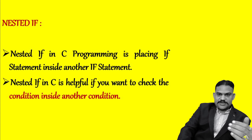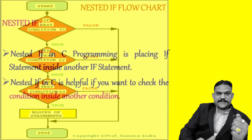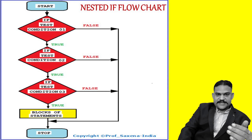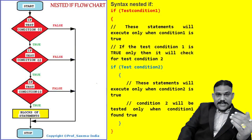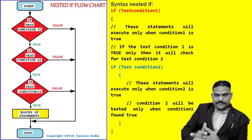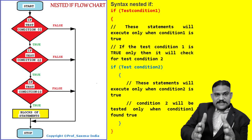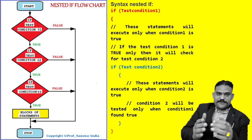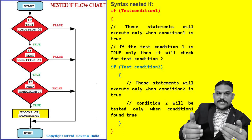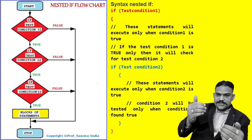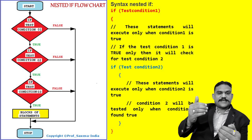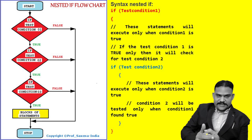You are looking at the flow diagram and syntax of the nested if statement. Here we have checked three if conditions: condition 1, and inside condition 1 we test condition 2, and inside condition 2 we test condition 3.